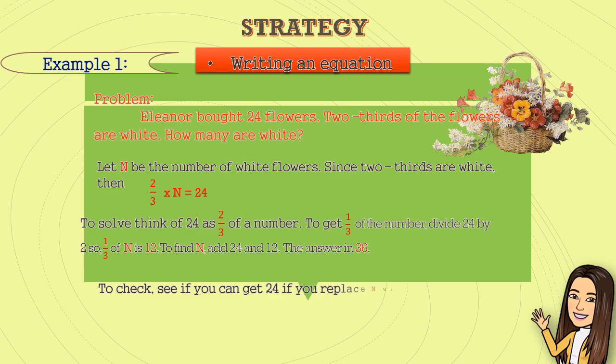To check, see if you can get 24 if you replace n with 36. Two-thirds times 36 equals 72-thirds or 24. Therefore, our answer is correct.